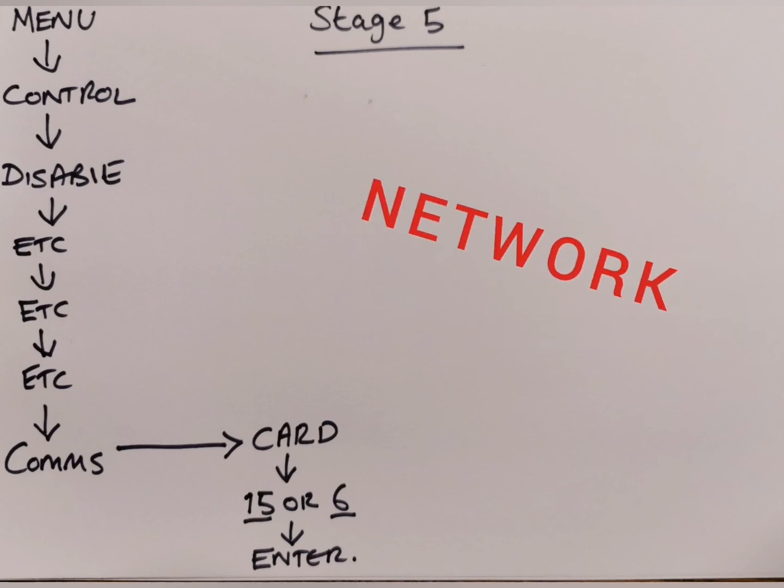To disable the network press the following: start with the menu button, then press the control button, then press disable. Now you have to press the etc button a total of 3 times. You may have noticed the button labeled comms situated above F1 but have been nervous about touching it. But fear not, press it, as this is the button you need to disable the Gent network.